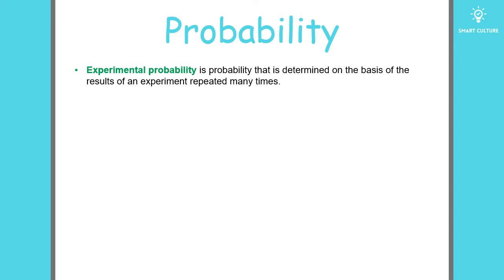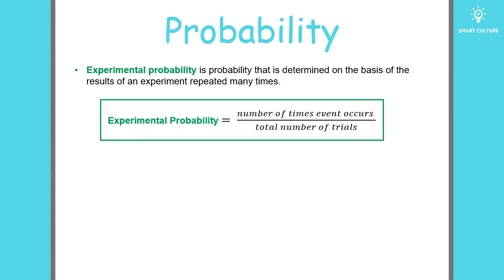Experimental probability is probability that is determined on the basis of the results of an experiment repeated many times. So here's the formula that you'll need: It's the number of times the event occurs divided by the total number of trials.